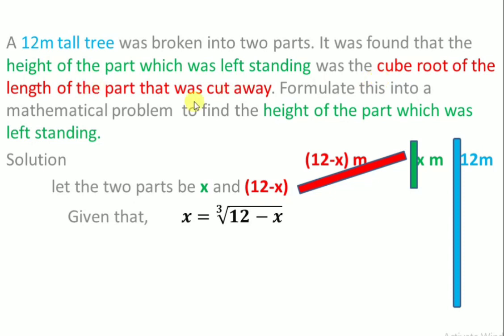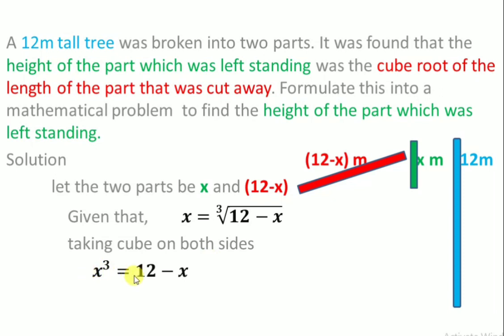Alternatively, the standing part was the cube root of the length of the cut away part, so x equals the cube root of 12 minus x. Taking cube on both sides, x cube equals 12 minus x. Rearranging, x cube plus x minus 12 is equal to 0. This is the required mathematical problem.